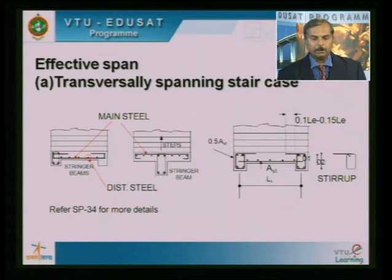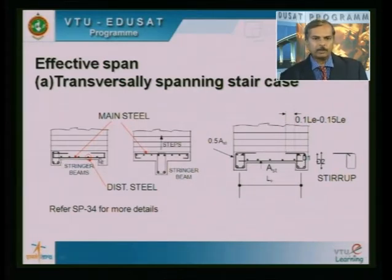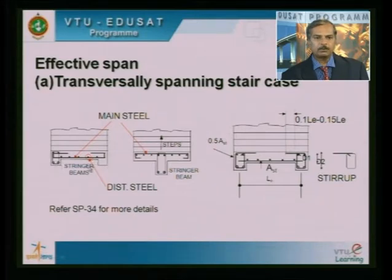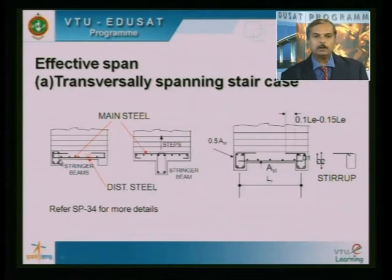These diagrams show the transversely spanning staircase. In the first type, the staircase is supported at the ends by means of beams or walls, and the center-to-center distance between the two supports is the effective span. The waist slab behaves as a simply supported slab spanning over the two beams or walls. The beam spans in the longitudinal direction — that is why the main reinforcement for the beam runs in the longitudinal direction. These are the two spandrel beams onto which the waist slab is supported.